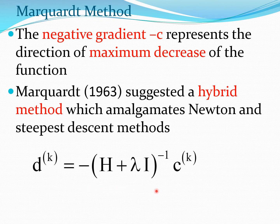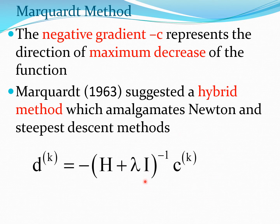Taking a close look at the particular search direction, you can see that when lambda is equal to 0, this will become the Newton method, and when lambda is very large, the lambda*I term is much larger than H and therefore it becomes a steepest descent type of method with a fixed step size. This search direction will satisfy the steepest descent direction if H plus lambda*I is a positive definite matrix.